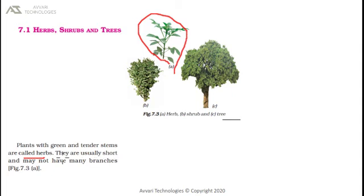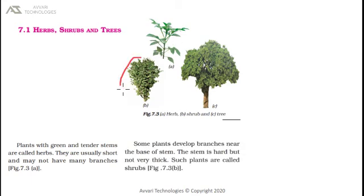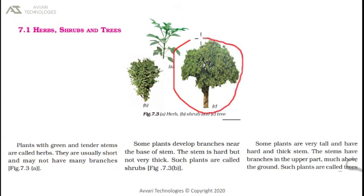Plants with green and tender stems are called herbs. They are usually short and may not have many branches. Some plants develop branches near the base of the stem; the stem is hard but not very thick. Such plants are called shrubs.